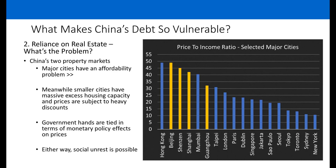There are two distinct property markets in China. Major cities face a serious affordability problem — China's major cities are among the most expensive in the world. On the other side, smaller cities have excess housing capacity and prices are subject to heavy discounts. For example, Country Garden Holdings, a major Chinese property developer, was forced to cut prices by around 30% at two of their projects in late 2018.